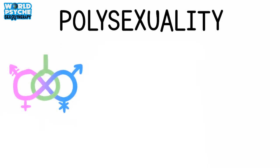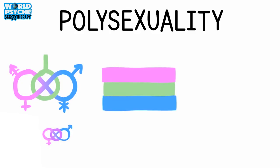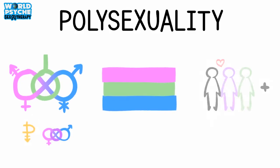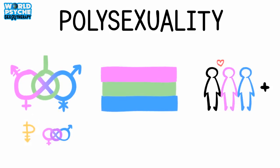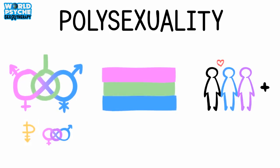5. Polysexuality. Polysexuality refers to people who are attracted to two or more genders. Typically, bisexuality and pansexuality are types of polysexuality, though not all people who are polysexual use these terms.